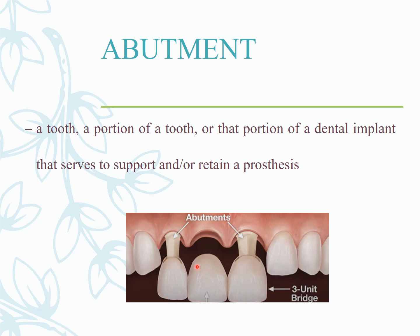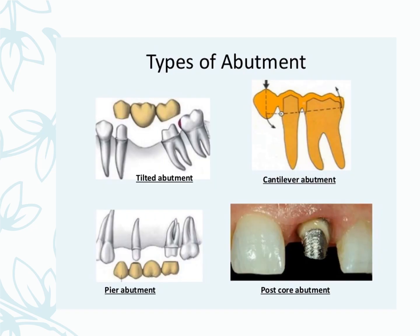An abutment is a tooth, portion of a tooth, or portion of a dental implant that serves to support or retain the prosthesis. Types of abutments include tilted abutments, cantilever abutments, pier abutments — where two are straight and one is tilted, or both are tilted — and post-and-core abutments.